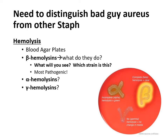Alpha hemolysis shows a color change from red to a greenish-brownish appearance where the bacteria is present — it's partially breaking down red blood cells but not fully, so you can't see through the plate. Gamma hemolysis shows no change at all — that bacteria is not breaking down any red blood cells. Of the three — beta, alpha, and gamma — beta is the worst and most pathogenic because it completely destroys red blood cells.